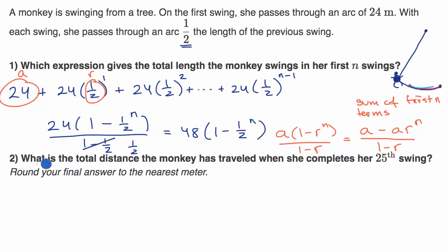Now the second part, they say what is the total distance the monkey has traveled when she completes her 25th swing? And they say round your final answer to the nearest meter. So pause this video and see if you can work that out.